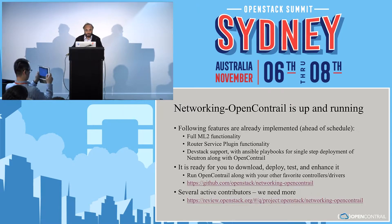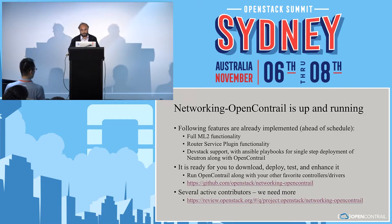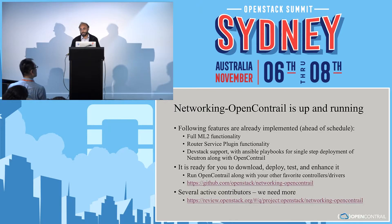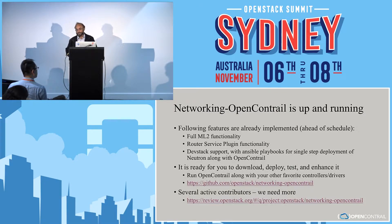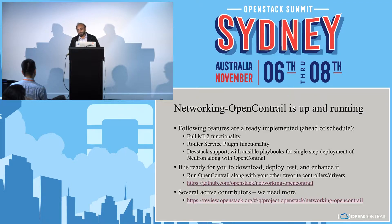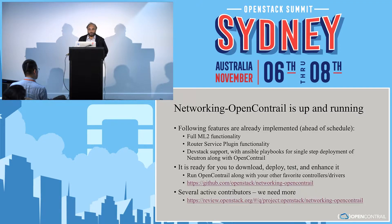We kicked this off about three months ago. We thought it would take anywhere between four and six months, so we are actually way ahead of schedule. Currently, with networking-opencontrail, you have full ML2 functionality, a router service plugin, and full DevStack support. In other words, with a single click by configuring Ansible playbooks, you could install OpenContrail as well as OpenStack along with Neutron and get going.